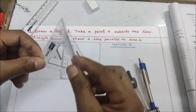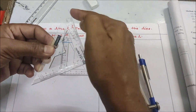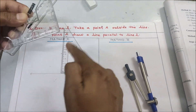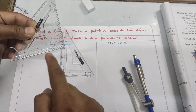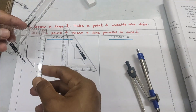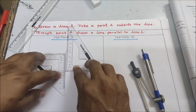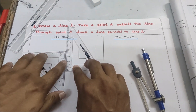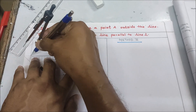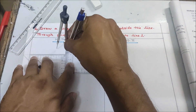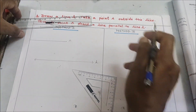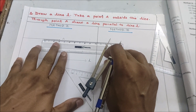Now we will take another set square. Again, its two edges have numbers. One edge should touch the first set square and the other edge should touch point A. You can see that one edge is touching the first set square and the other edge is on the point. Now we will draw a line using this edge of the set square.